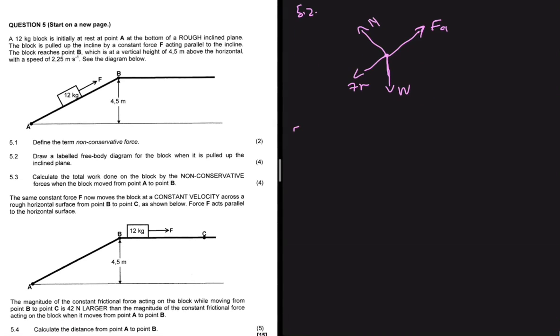Now we can solve 5.3. 5.3 is saying calculate the work done on the block by the non-conservative forces when the block moved from point A to B. So we know that work net equals the change in EK. But then what is another way we can represent work net? Work net can be work done by non-conservative forces plus the work done by conservative forces. The conservative force that is acting there is gravity.